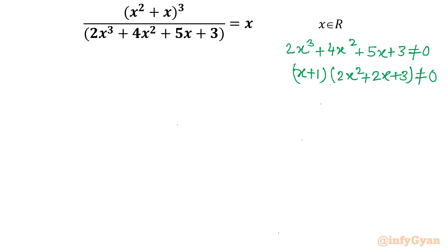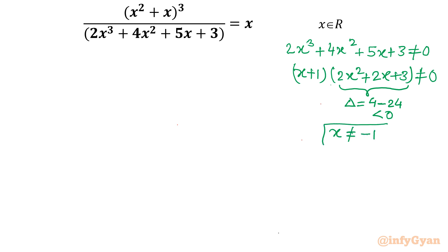Looking at the quadratic 2x² + 2x + 3, let's calculate the discriminant: b² - 4ac = 4 - 4×2×3 = 4 - 24, which is a negative number. Since the discriminant is negative, it gives complex solutions — meaning this quadratic has no real roots. Conclusion: for real values, x cannot be equal to -1. We need to keep that in mind.